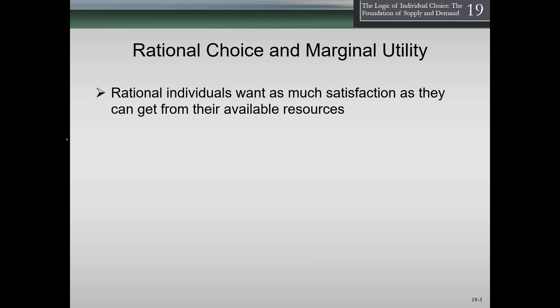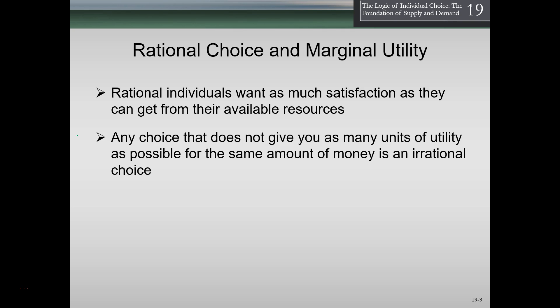Rational individuals want as much satisfaction as they can get from available resources — that's the assumption we're making. We're basically assuming people are already doing that; they're making choices because they're rational, and therefore what they spend their money on means they are maximizing their satisfaction and their utilities. Any choice that does not give you as many units of utility as possible for some amount of money is an irrational choice.